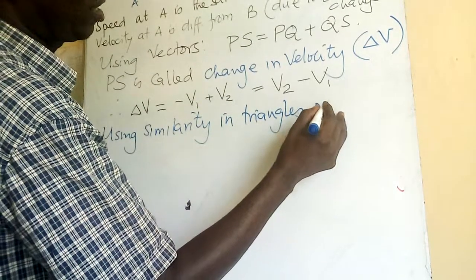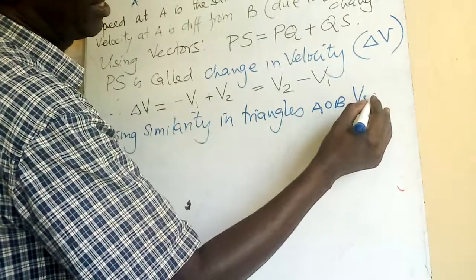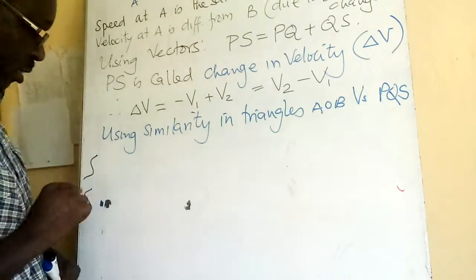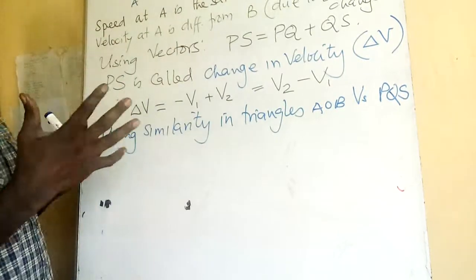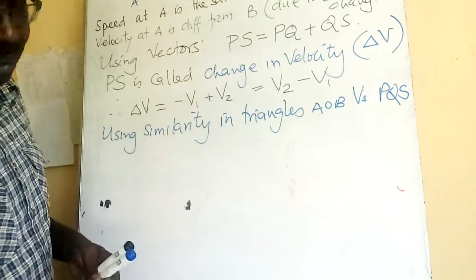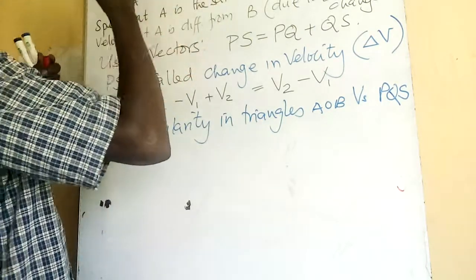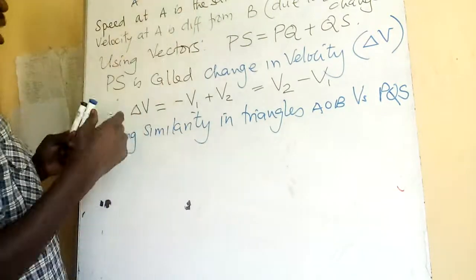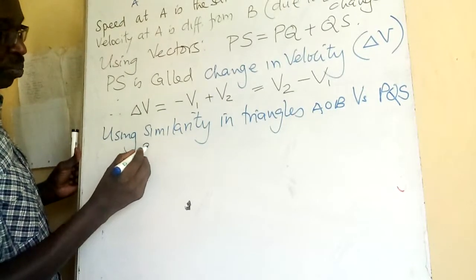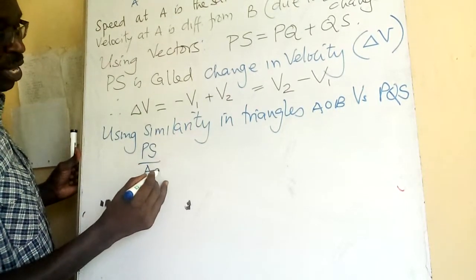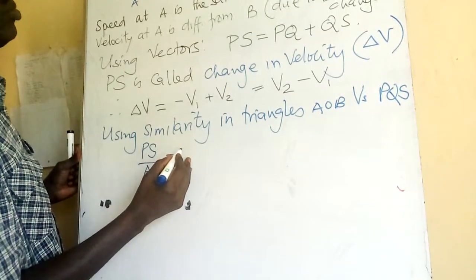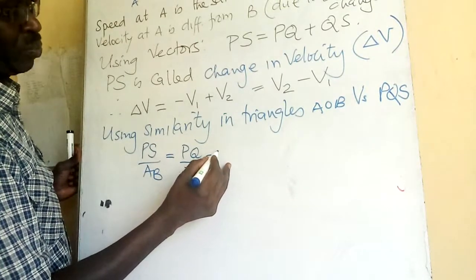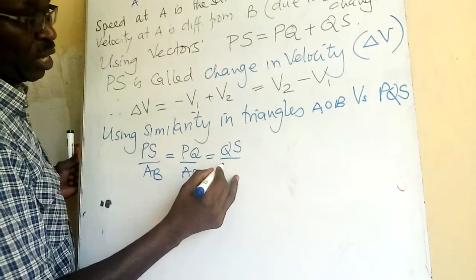Using similarity in triangles, we can say triangle AOB is similar to triangle PQS. Using similarity, we can say: PS over AB is equal to PQ over AO, which is equal to QS over BO.